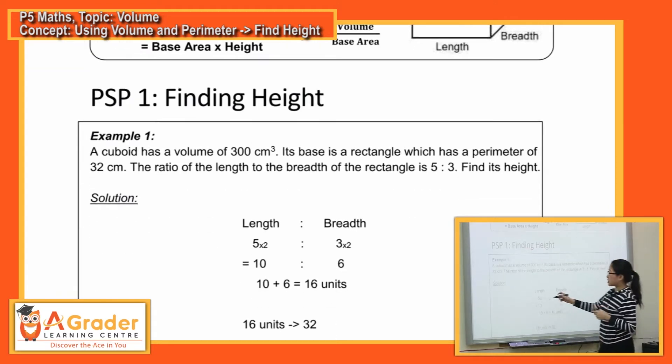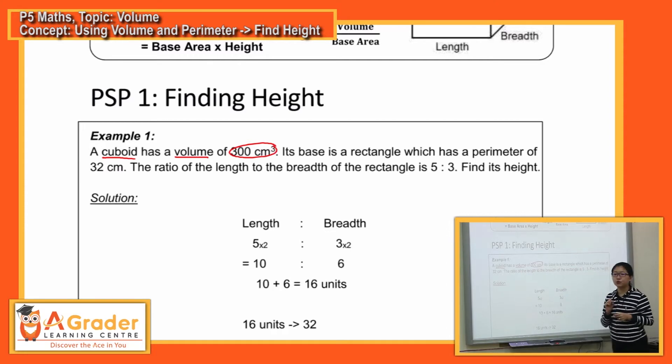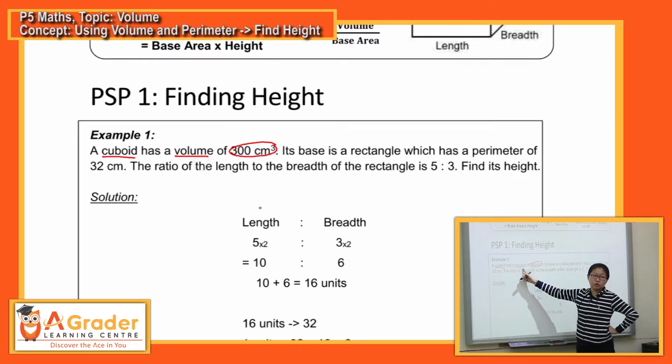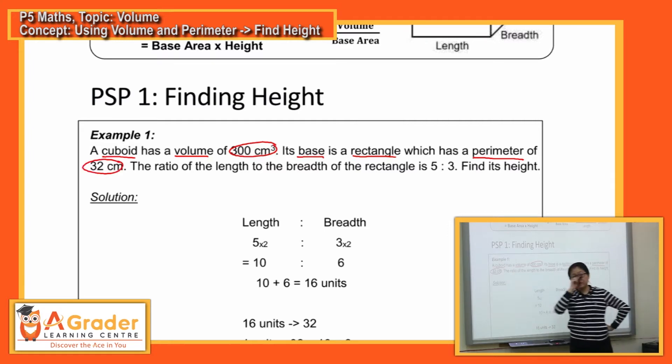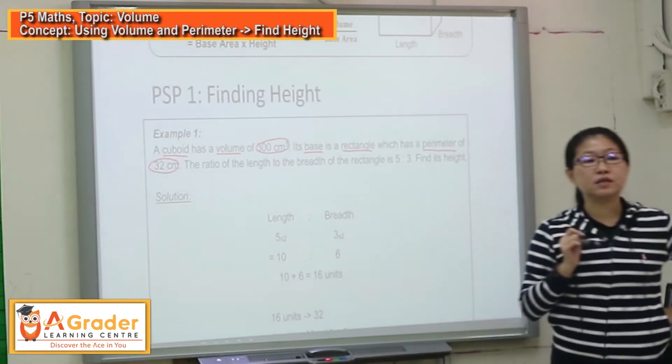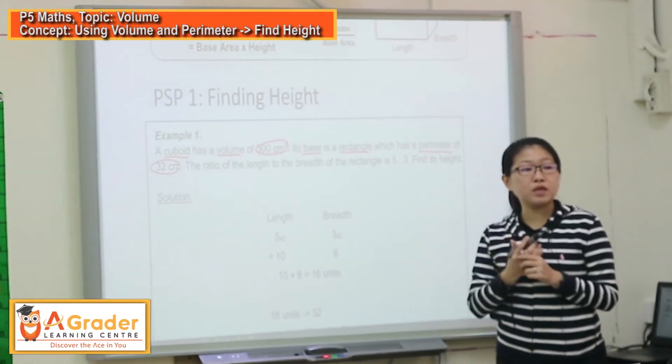So looking at this example, they said that the cuboid has a volume of 300 cm cubed. So this is volume, take note. Then its base is a rectangle which has a perimeter of 32 cm. We actually did a question like this last week, which involves perimeter. So perimeter, how do we get perimeter?